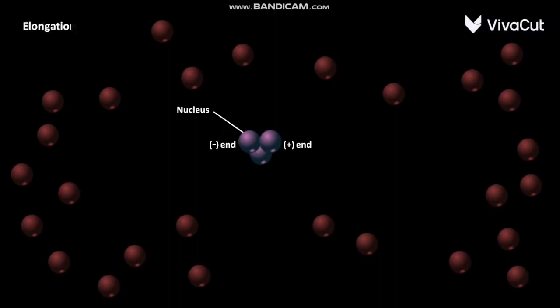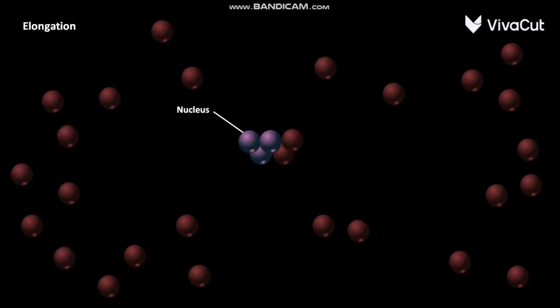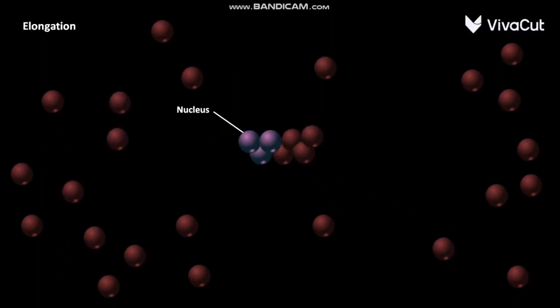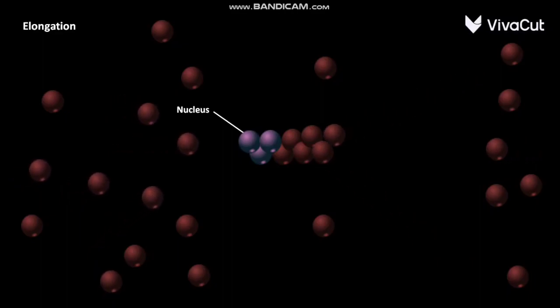During elongation phase, the G-actin monomers are added to both minus-end and plus-end of nucleus rapidly.